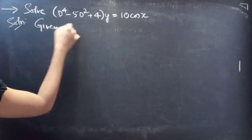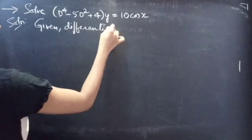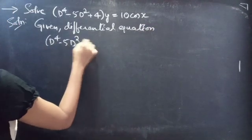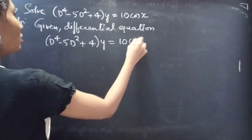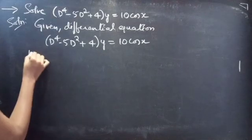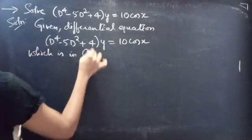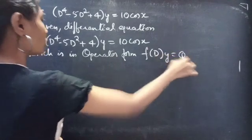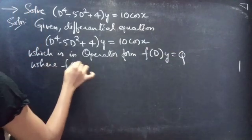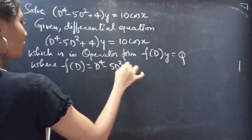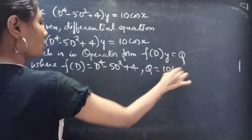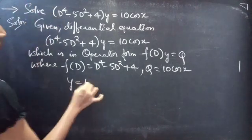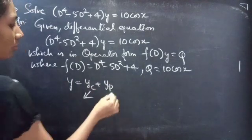The given differential equation is (D⁴ − 5D² + 4)y = 10 cos x, which is in operator form: f(D)·y = Q, where f(D) = D⁴ − 5D² + 4 and Q = 10 cos x. We need to find the general solution, given by y = yc + yp.